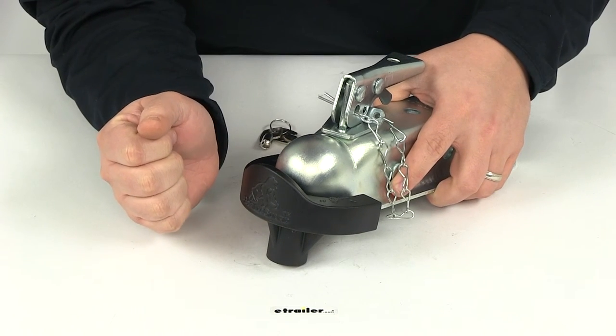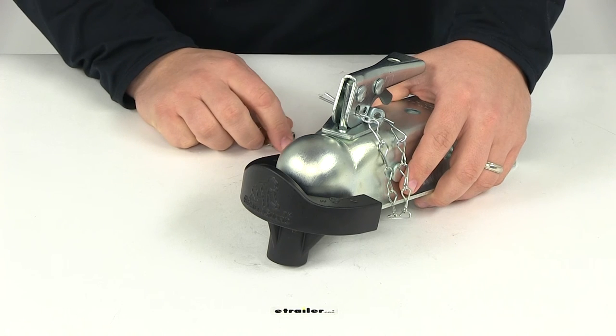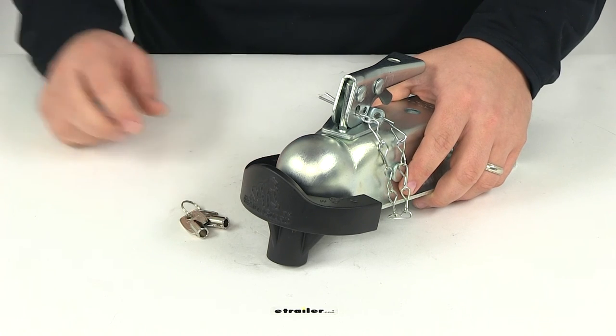That's going to do it for our review of part number 63228. This is the Tow Ready Gorilla Guard trailer coupler lock for 2-inch couplers.